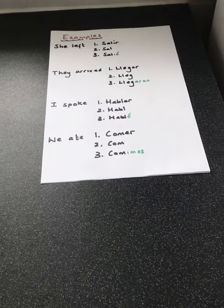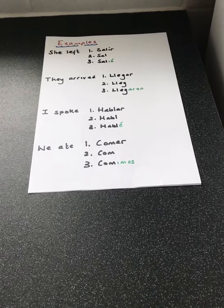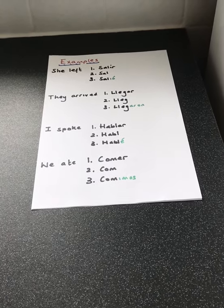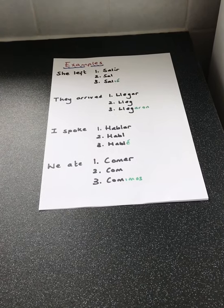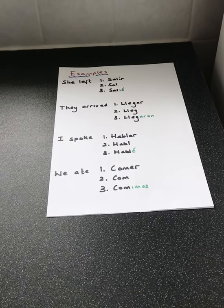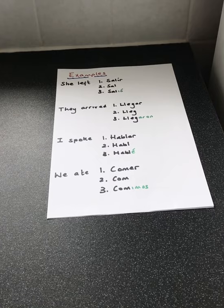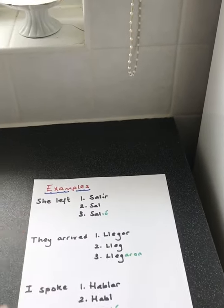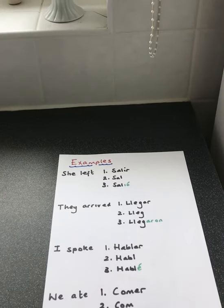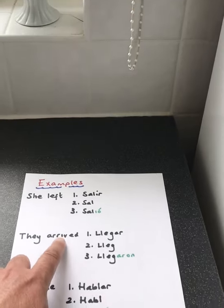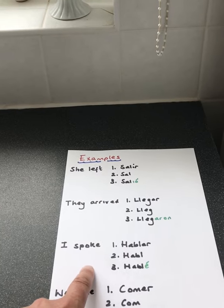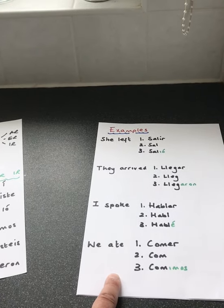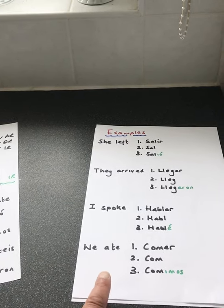Remember, when you're looking in the dictionary, you must look for the infinitive that ends in AR, ER, or IR. If it does not end in AR, ER, or IR, it is not an infinitive. Do not look up things like 'left' — you don't say 'to left', you would say 'to leave'. To arrive, to speak, to eat. Those are examples of infinitives.